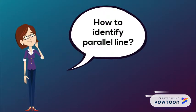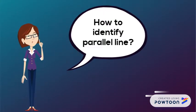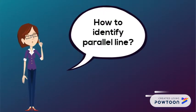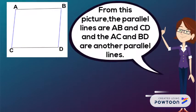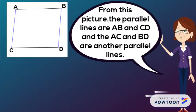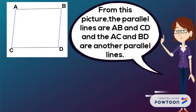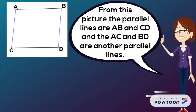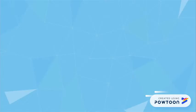How to identify parallel light? From this picture, the parallel lines are A, B and C, D. And A, C and B, D are another set of parallel lines.